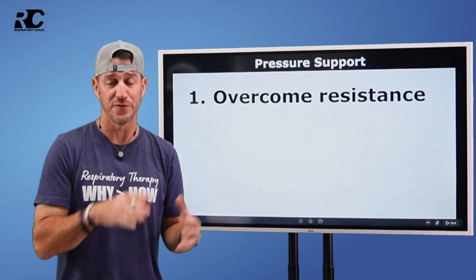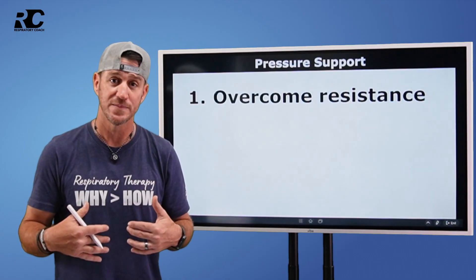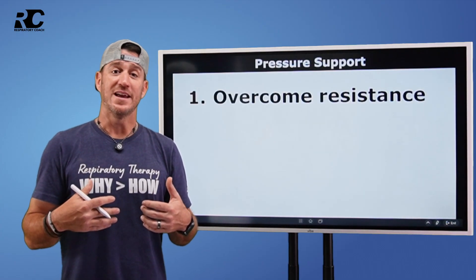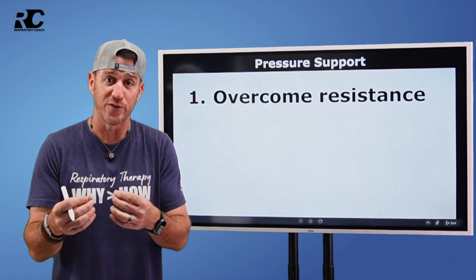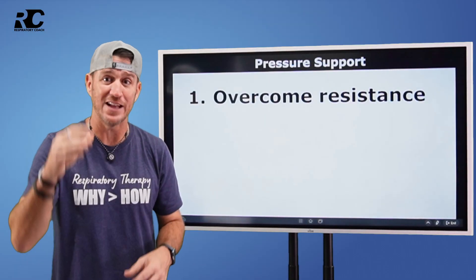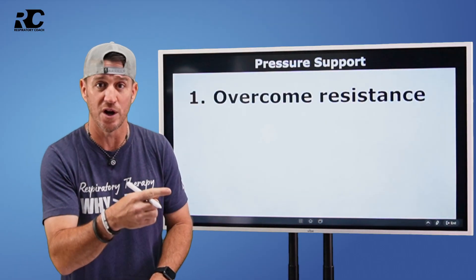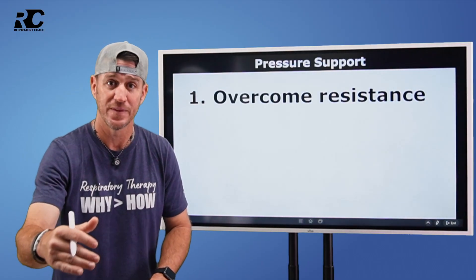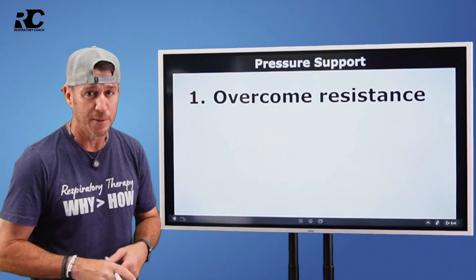And then it says flow cycled, which means what turns the pressure support off? You can't exhale against the ventilator who's pushing a flow of gas into your lungs to maintain a pressure, so something's got to tell the vent to turn off — and that is flow. As the patient's inspiratory flow slows, the breath comes in, and as you reach full, your lungs feel it and your inspiratory flow slows down. When the ventilator recognizes that to a certain point, it turns the pressure support off because their lungs are almost full and they're about to exhale.